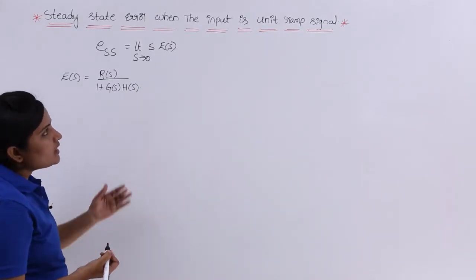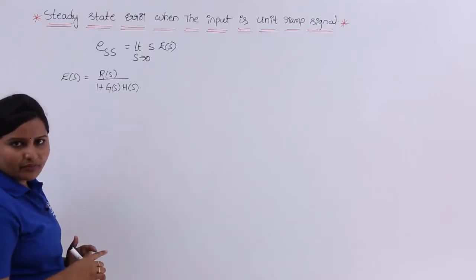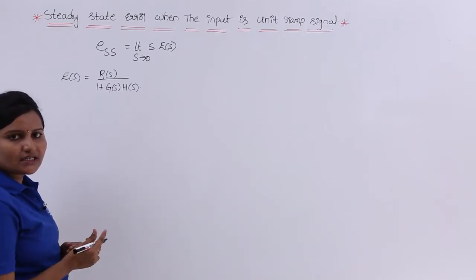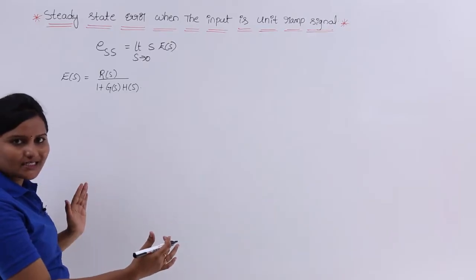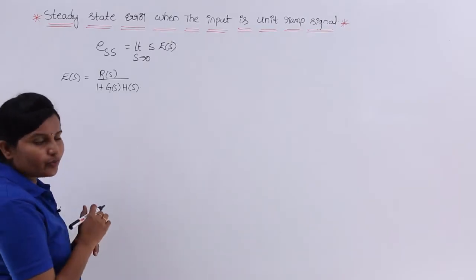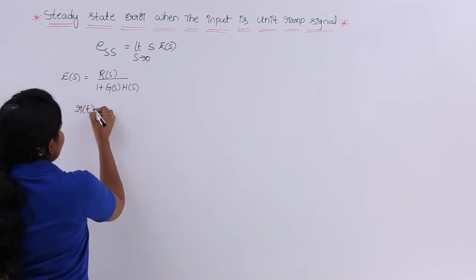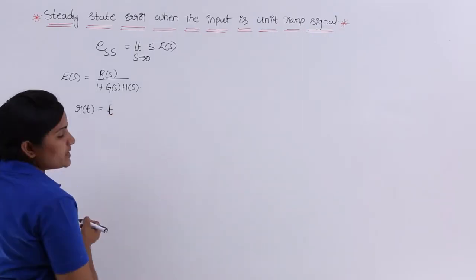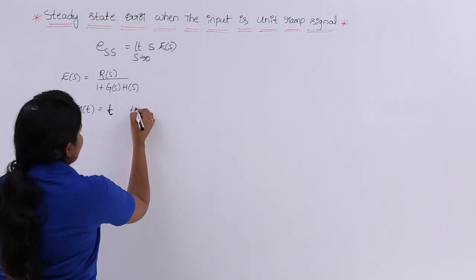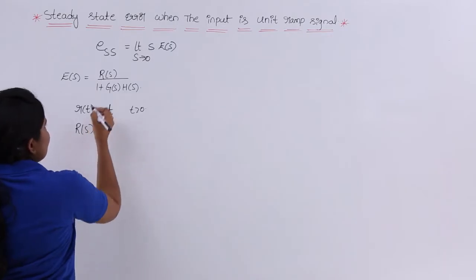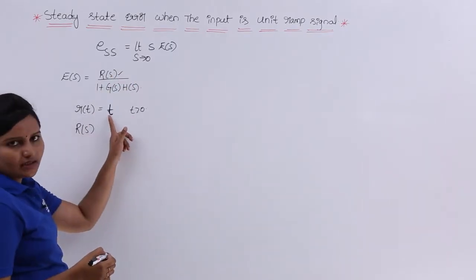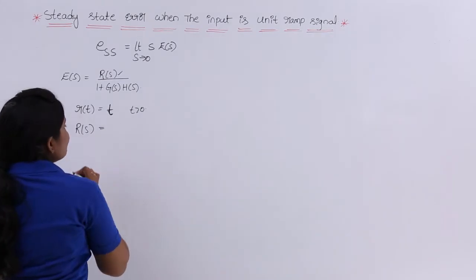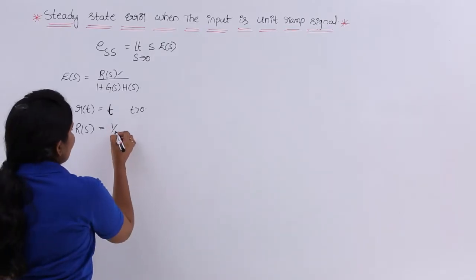Now, the input is the unit ramp signal. For any control system, from the initial videos onwards, we consider R(T) as the input and C(T) as the output, meaning R(S) as input and C(S) as output. Here, the input R(T) for our control system is the ramp signal. The ramp signal is represented as T, for T greater than or equal to 0. Since we require the frequency domain of the input, we need R(S), and the Laplace transform of the ramp signal is 1 by S squared.